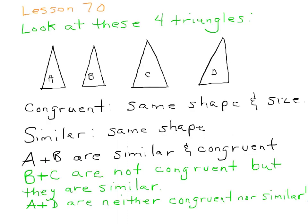All right, here we go. With Lesson 70, I want you to look at these four triangles. I did the best I could to make them the way they should be. So the word congruent, and again, put this in your math journal, is same shape and size. Similar would be same shape. So we can look at all these and say that A and B are both similar and they're congruent. They're supposed to be at least. Same shape and size, okay?